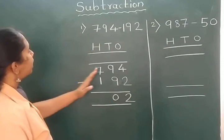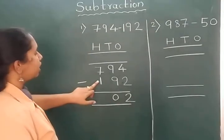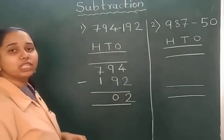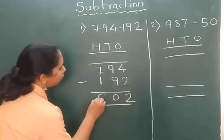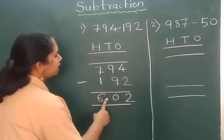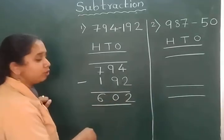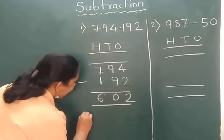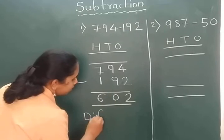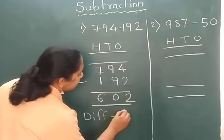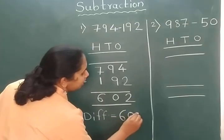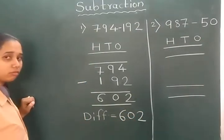Now we will subtract 7 minus 1, so 7 minus 1 becomes 6. So our answer is 602. To this answer we also call it as difference. Difference is 602.